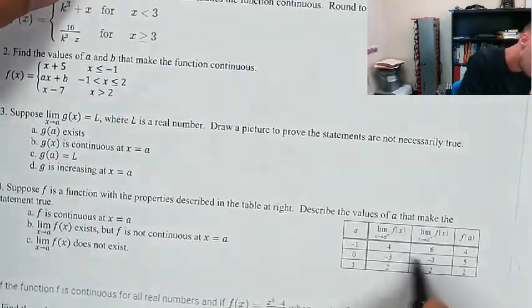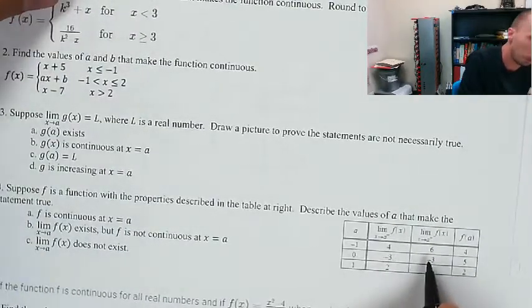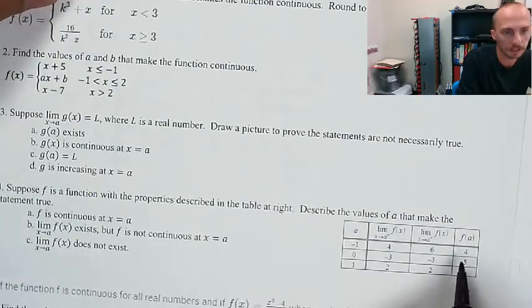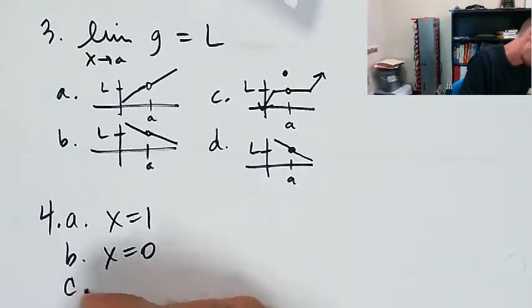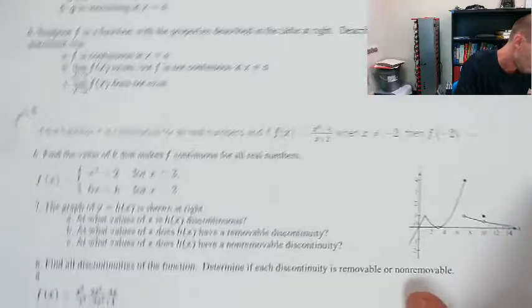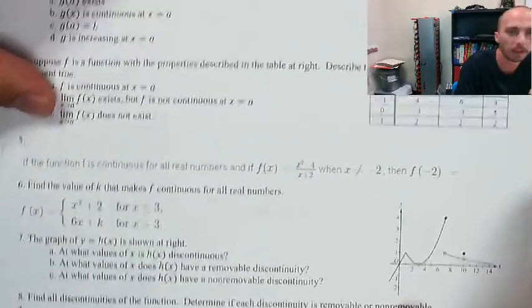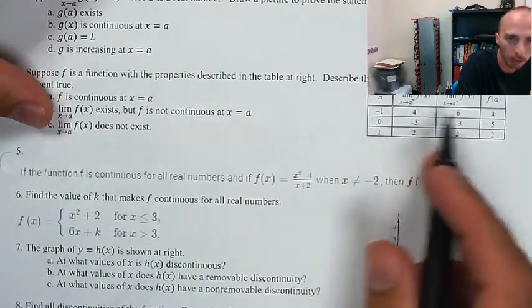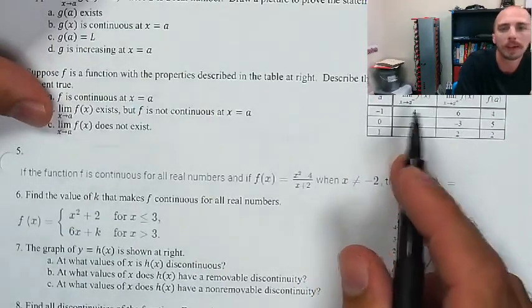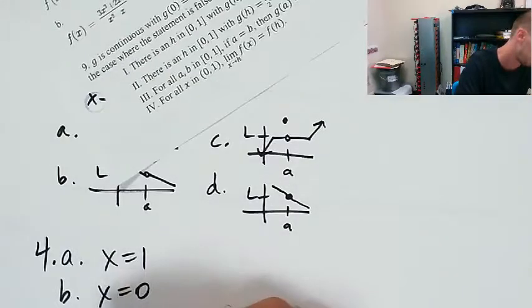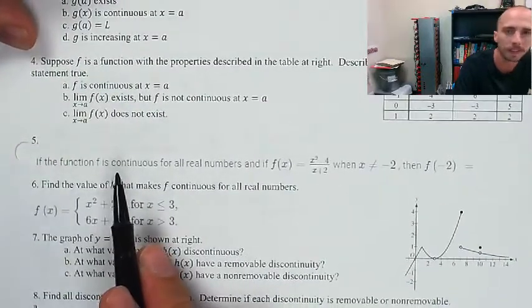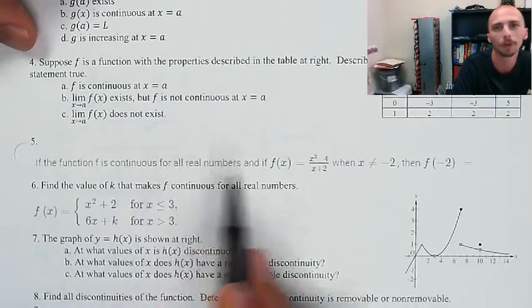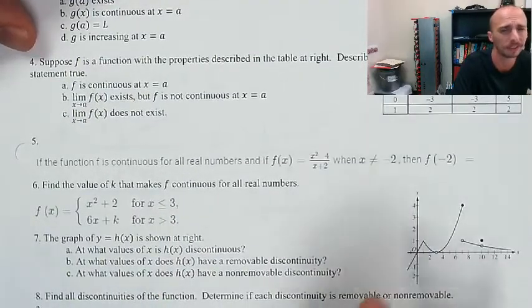The limit of f of x exists, but f is not continuous. The limit exists because the limit from the left is equal to the limit from the right, but it's not equal to the value of the function, so it's not continuous. That's x equals zero. And then c, the limit as x approaches a of f of x does not exist. That's x equals negative one, because the limit from the left does not equal the limit from the right.